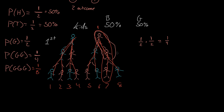Let's verify that with math. The probability of having your first girl is one out of two. The probability of having your second girl is one out of two. The probability of having your third girl is one out of two. So the total probability of having three girls in a row is one half times one half times one half, which equals one out of eight.